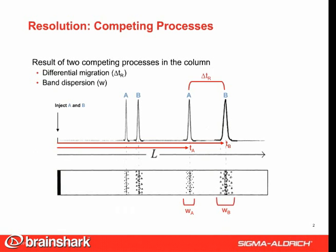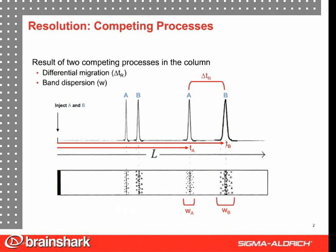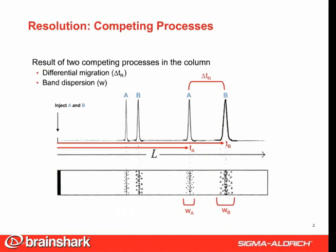At any point along the column, the bands have a certain width and are separated by a certain delta t sub r. This is what column manufacturers focus on — ways to maximize the differential migration, the delta t sub r, and ways to minimize band dispersion, W.